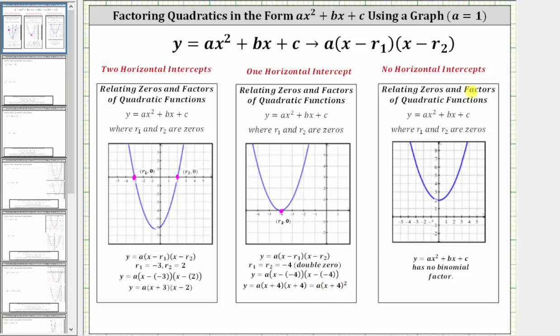The third possibility is to have no horizontal intercepts. When this happens, because there are no real zeros for the function, ax squared plus bx plus c has no binomial factors.